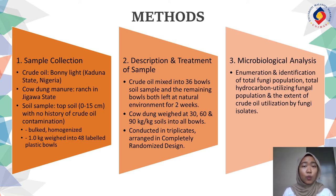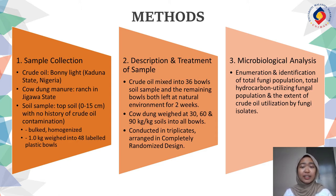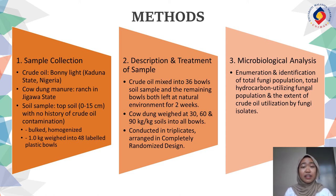Then 1 kg of the soil is weighed into 48 labeled plastic bowls. Second, description and treatment of sample: crude oil is mixed into 36 bowls out of 48 bowls of soil sample, and the remaining bowls are left at natural environment for 2 weeks. Cow dung manure is weighed at 30, 60, and 90 grams per kg of soil into all bowls.